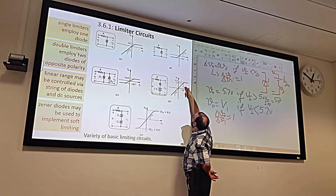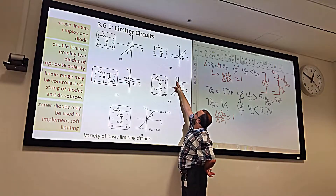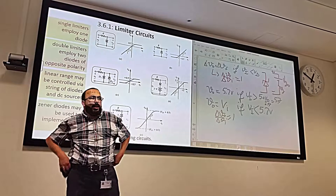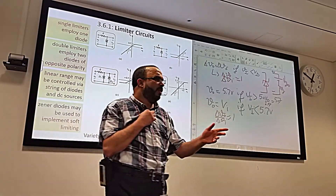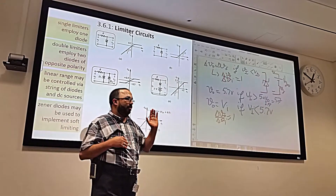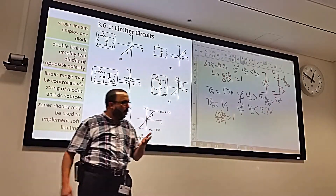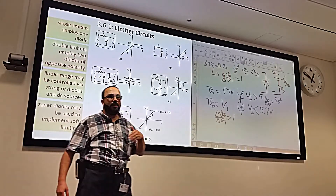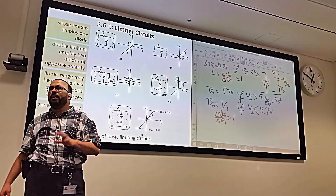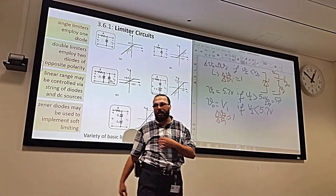So below 5.7V we have V_out = V_in (slope = 1), and above 5.7V the output is constant at 5.7V. All these limiter circuits use the CBD model and do not factor in the breakdown effect — CBD model means battery in forward, open in reverse, no breakdown.